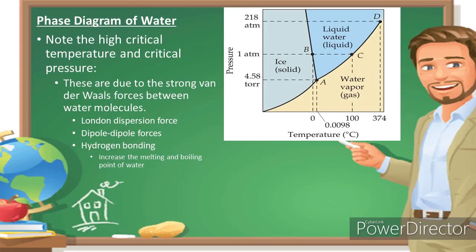For the phase diagram of water, note the high critical temperature and critical pressure. These are due to the strong intermolecular forces between water molecules — specifically hydrogen bonding — which increases the melting and boiling point of water. That is why you need 100 degrees Celsius to observe the boiling point, which is the point at which liquid turns into gas or vapor.